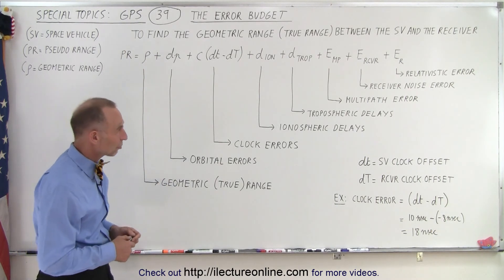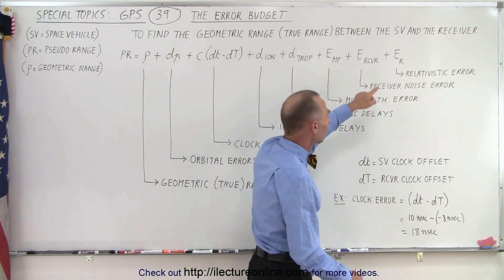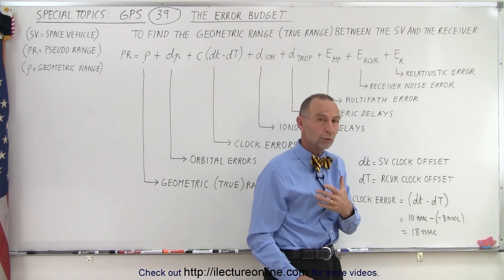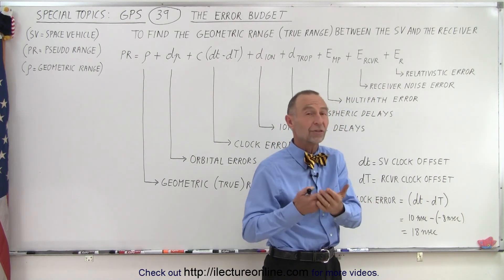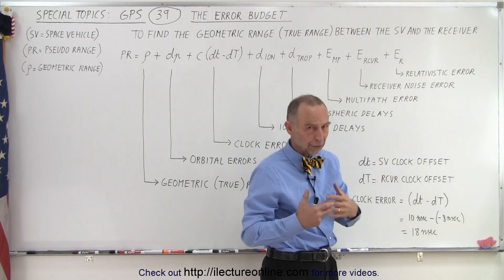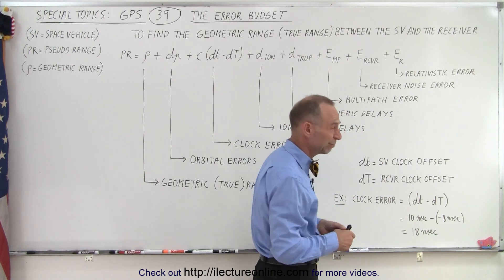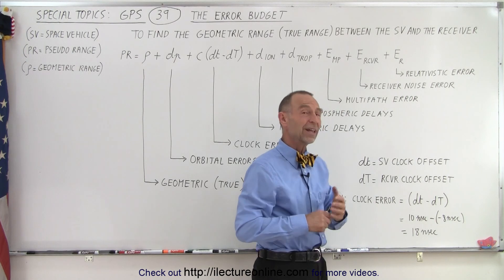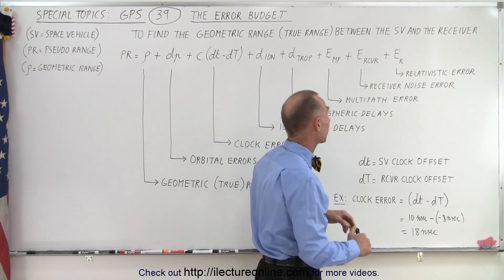So what are all these different correction terms? We have relativistic errors, both due to the general and special theory of relativity. We have to make adjustments for that, otherwise we're going to have a substantial error, and we don't want that.